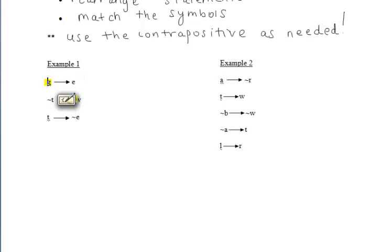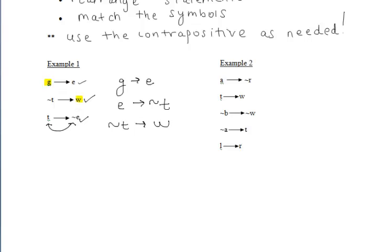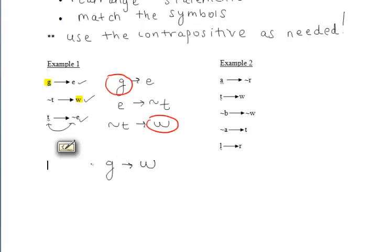First, find the two letters that stand alone — we only have one copy of G and one copy of W. Starting with 'if G then E,' we next need an 'if E.' We have 'if T then not E,' so we take its contrapositive to get 'if E then not T.' Then we need 'if not T,' and we have 'if not T then W.' So the chain gives us: G→E, E→¬T, ¬T→W, and our final answer is if G then W.